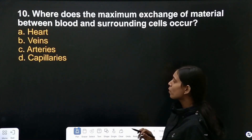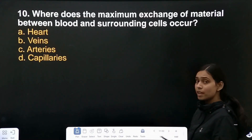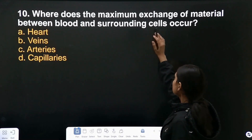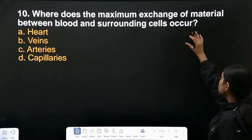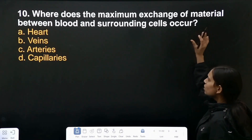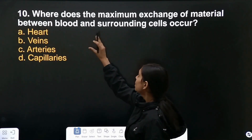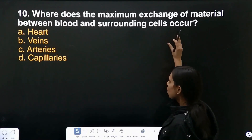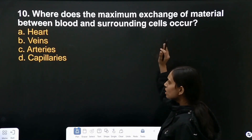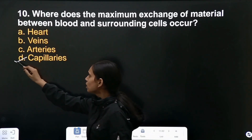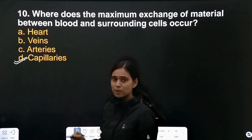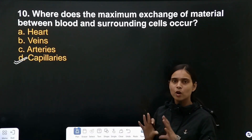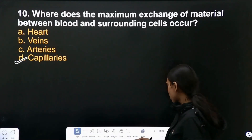Question number 10: where does the maximum exchange of material between blood and surrounding cells occur? It occurs through the capillaries, because capillaries are spread throughout the body.